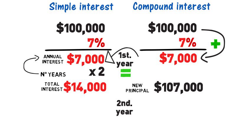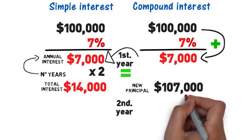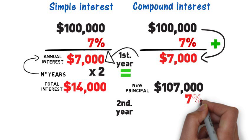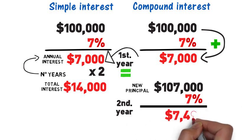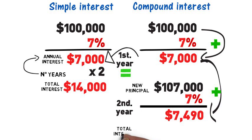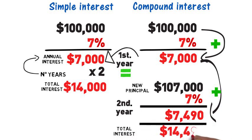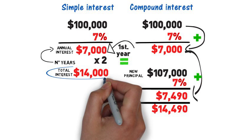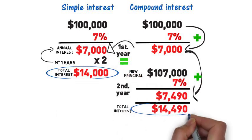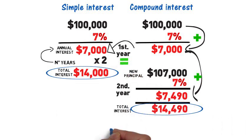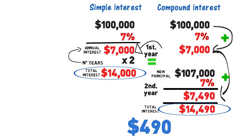We multiply that by the fixed interest rate of 7% and we'll get the second year's interest of $7,490, for a total of $14,490. As you can see, the difference between the simple interest and the compound interest loan is $490.